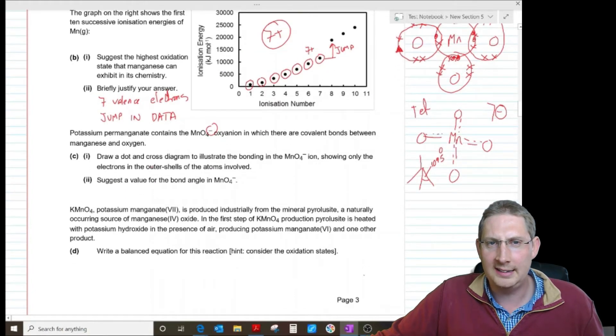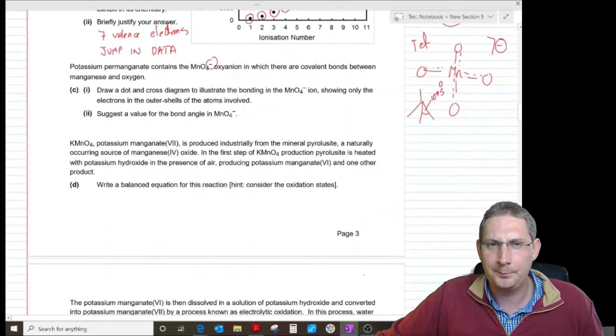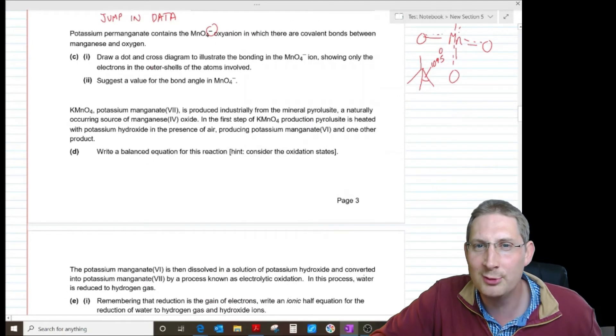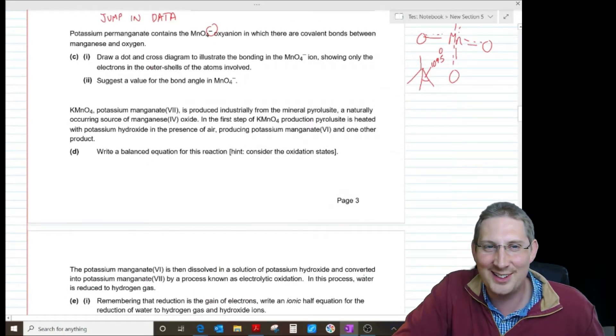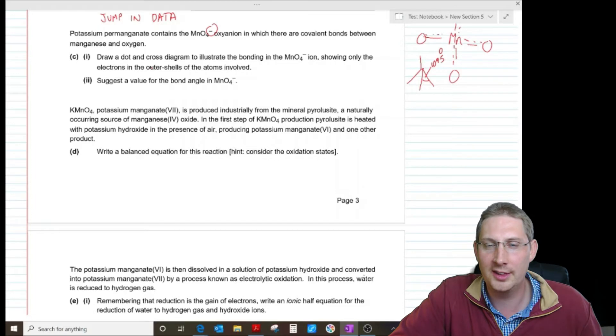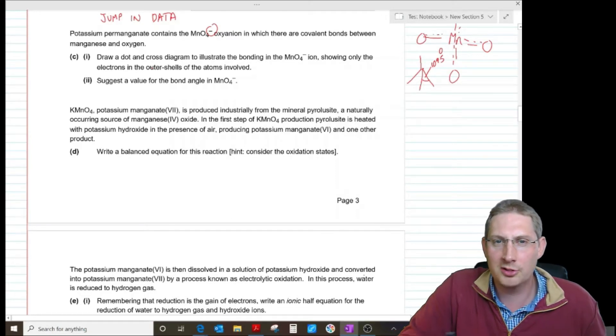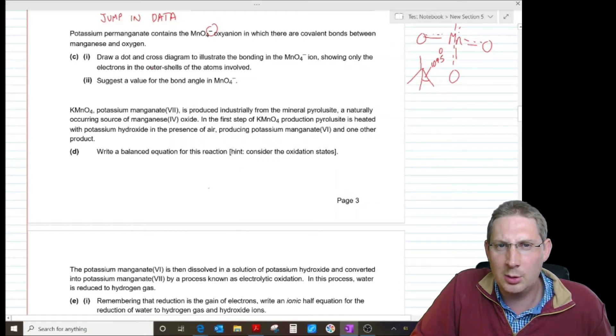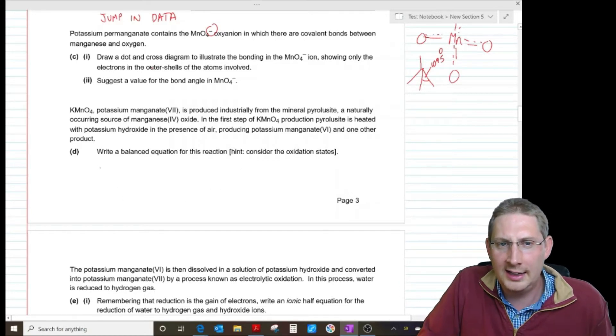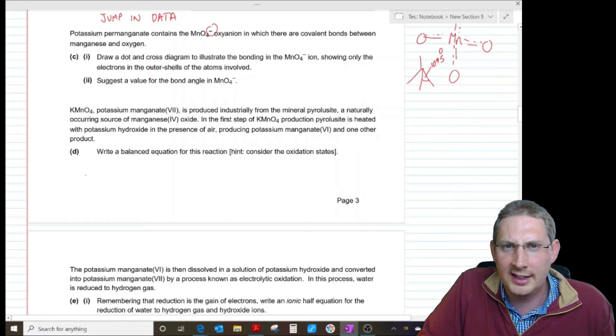Potassium manganate is produced industrially from the mineral pyrolusite, a naturally occurring source of manganese four oxide. In the first step of KMnO4 production, pyrolusite is heated with potassium hydroxide in the presence of air, producing potassium manganate six and one other product. Write a balanced equation for this reaction. Hint, consider the oxidation states.